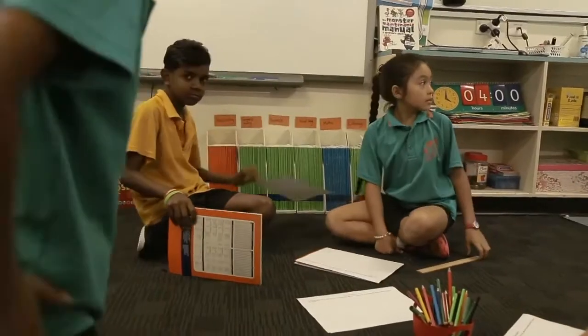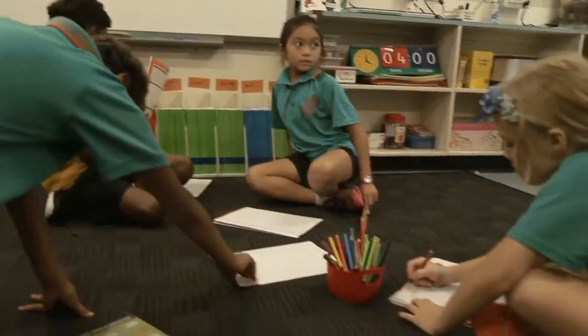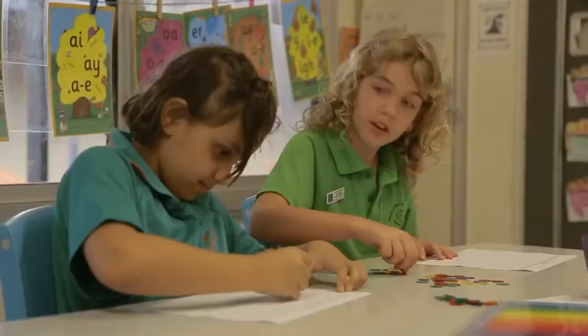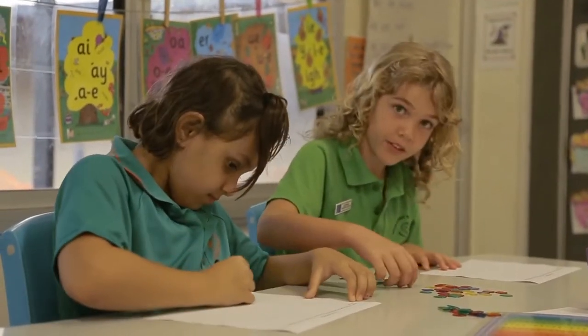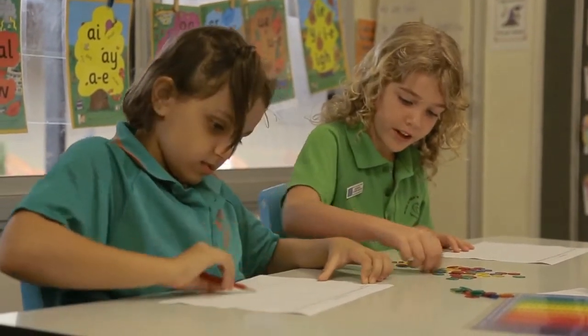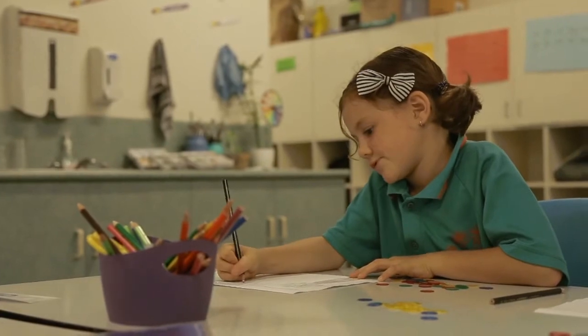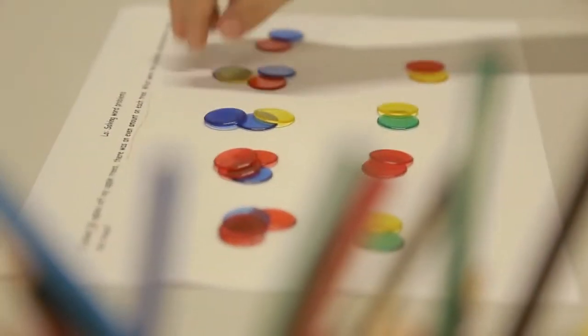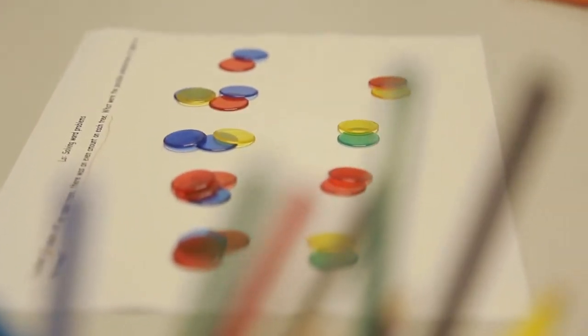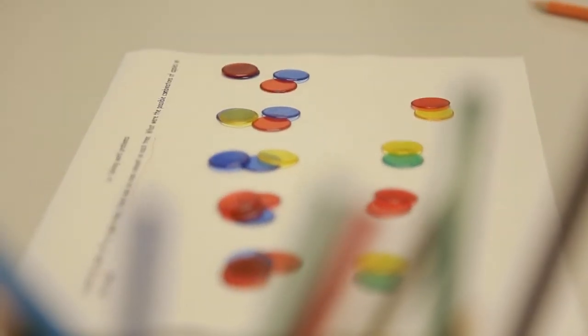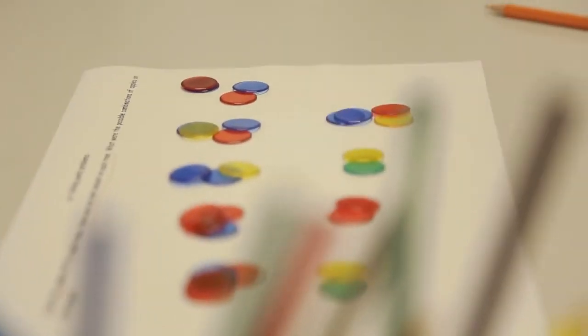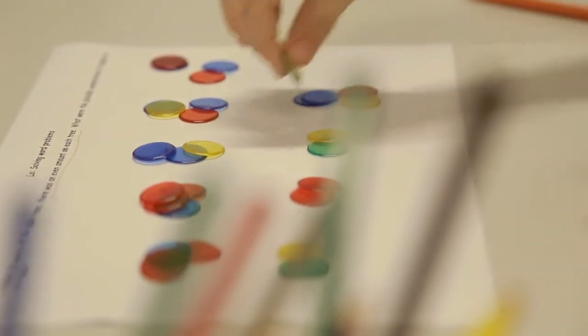After we explored the word problem with the class, they received that word problem on a piece of paper, and they went to their tables and independently solved that problem. So by using a manipulative, such as counters or a drawing, it enables them to touch and to see and to physically move them around to get to their answer, so they don't lose track. It's not all just in their head.